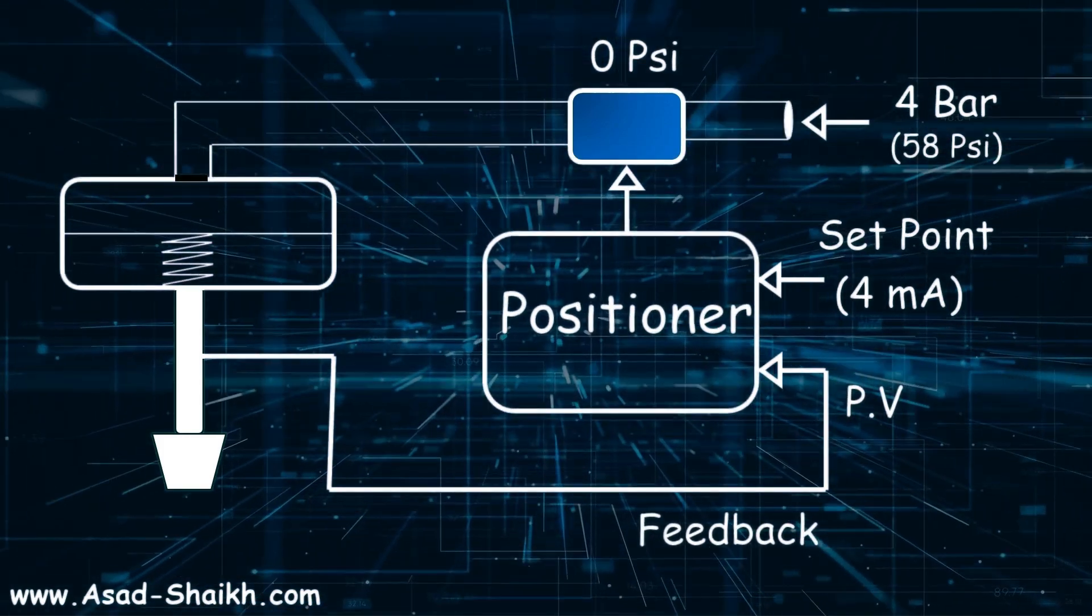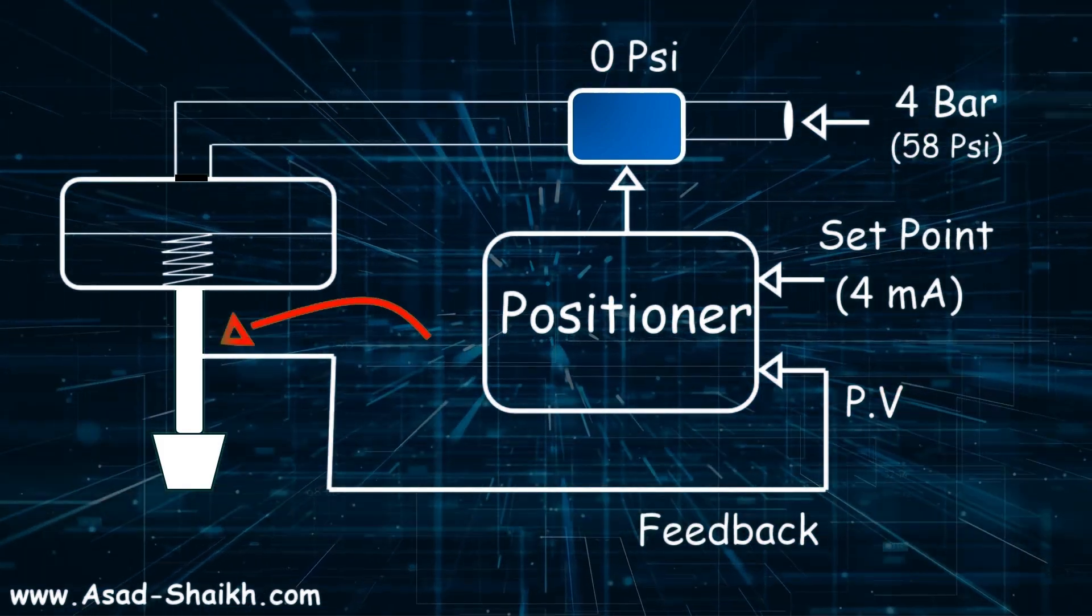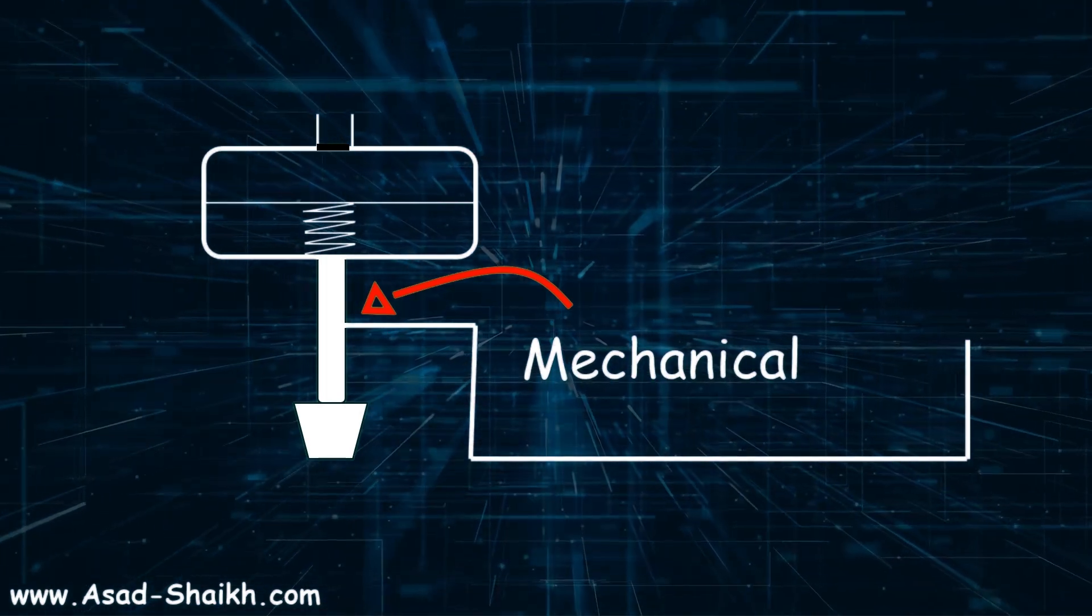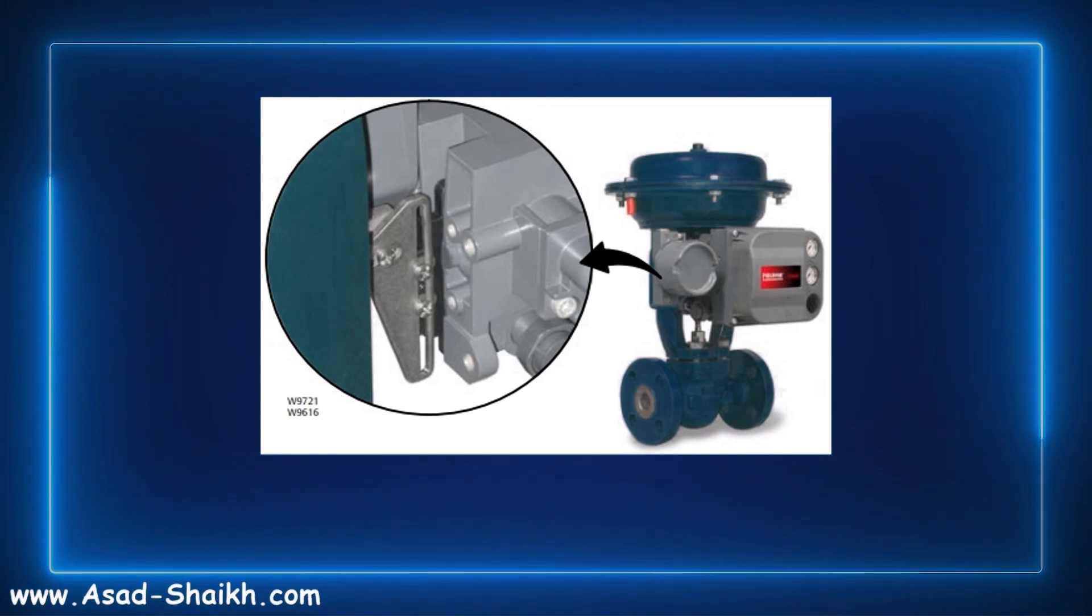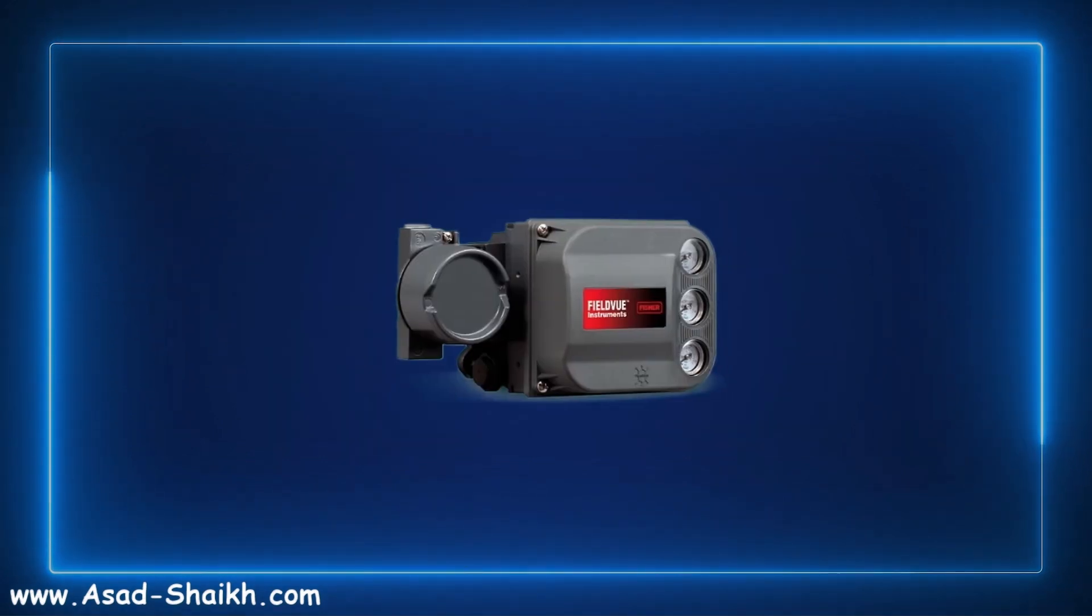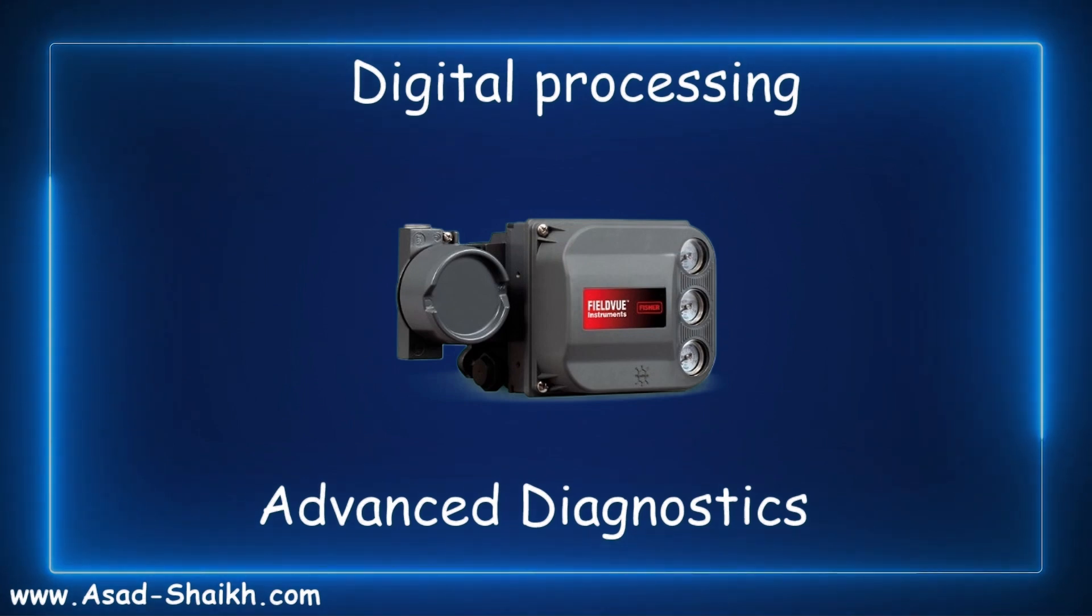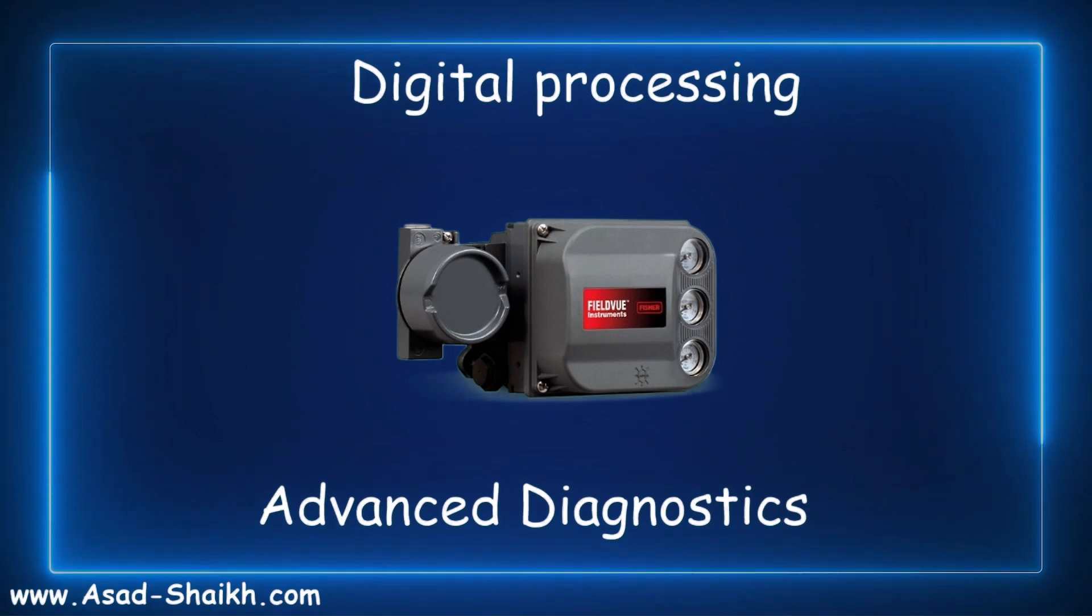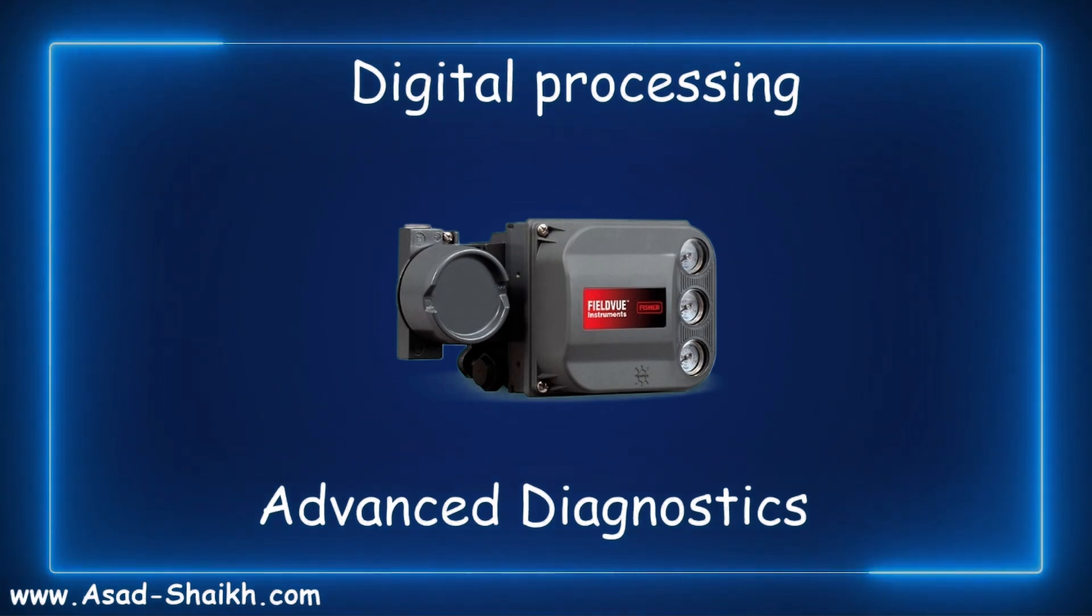But there have been a lot of advances in positioner systems. For example, this mechanical linkage is obsolete. Most of the positioners that now come in the market have linkage-less connection. For example, this is the Emerson control valve positioner where there is a linkage-less connection available. Notice that the positioners now have digital processing and advanced diagnostics, so you already get to know beforehand whether the controller is going to fail, is the packing going to fail, is there fugitive emissions happening, or any other issues can easily be diagnosed before even the control valve failing.